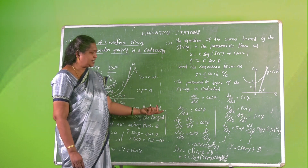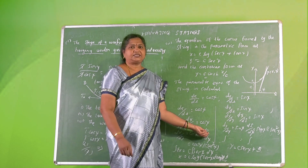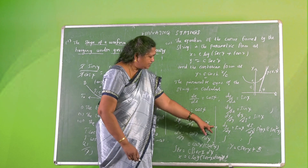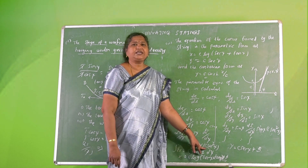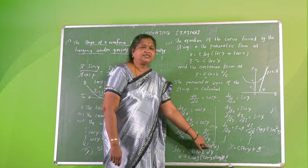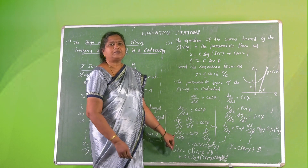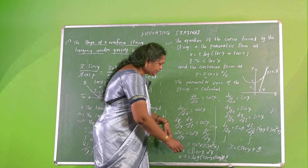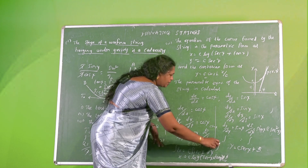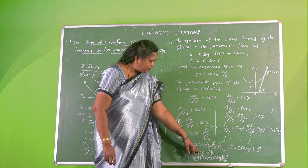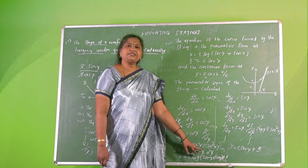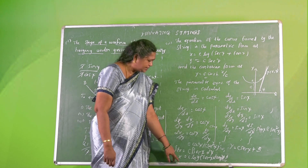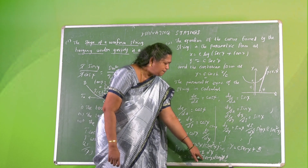Substituting, dX/dψ = cos ψ · C sec²ψ. Integrating both sides: X = C ∫ sec ψ dψ, since cos ψ · sec²ψ simplifies to sec ψ. This gives X = C log(sec ψ + tan ψ) + A. When ψ = 0, X = 0, so A = 0.